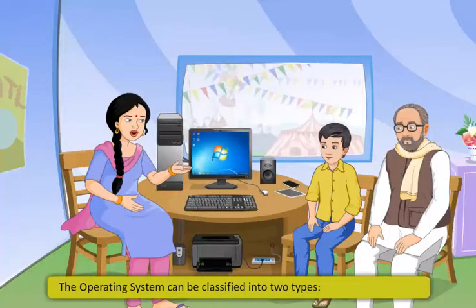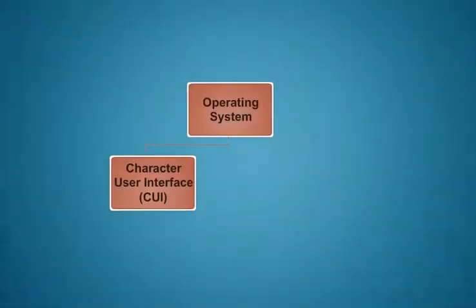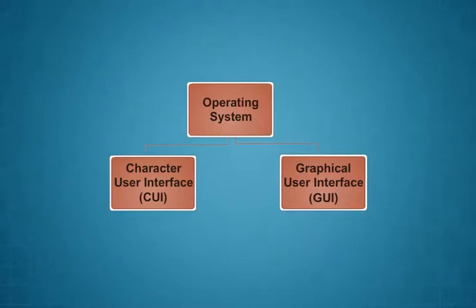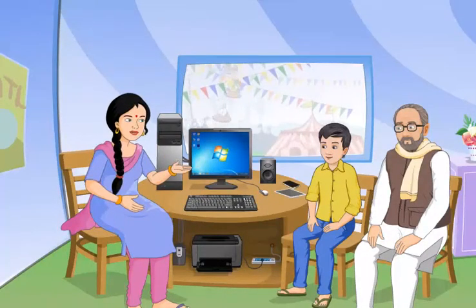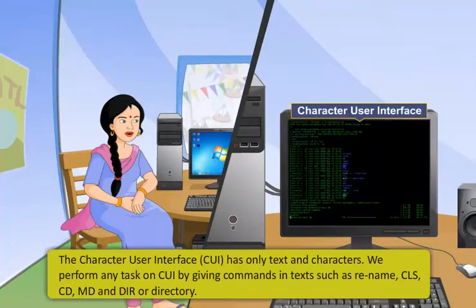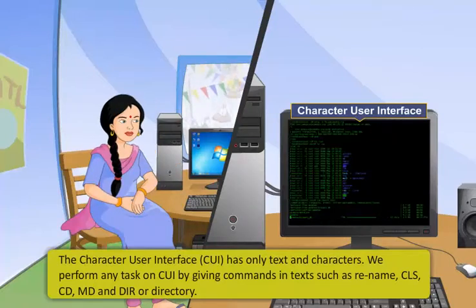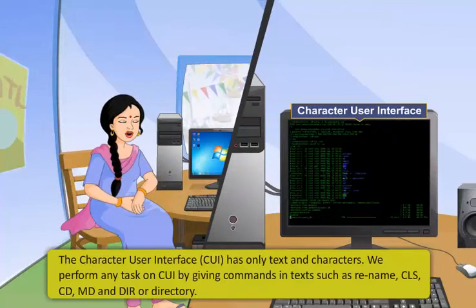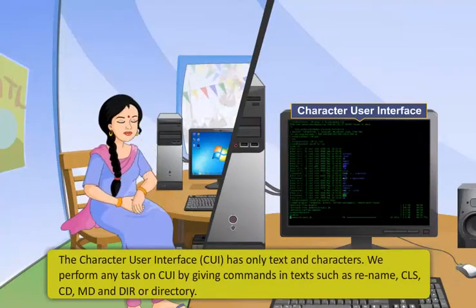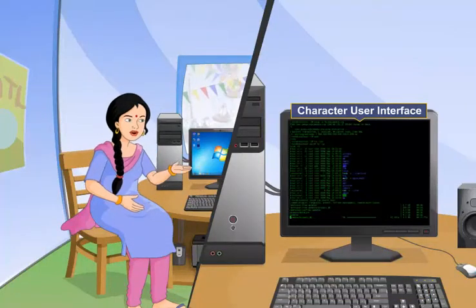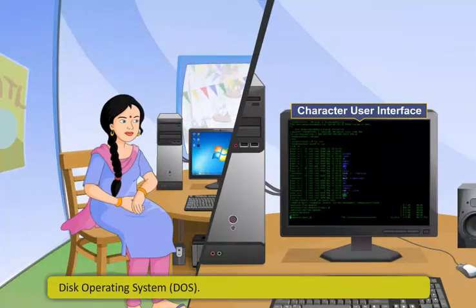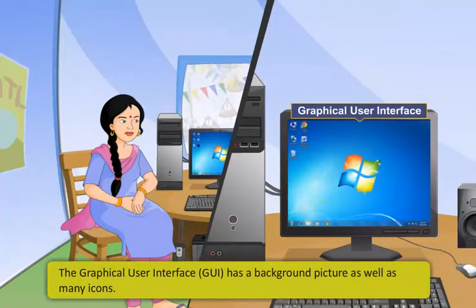The operating system can be classified into two types: Character User Interface and Graphical User Interface. Character User Interface does not have any icons or images — it works using only text and characters. We can perform tasks on CUI by giving commands in text such as rename, CLS, CD, MD, and DIR or directory. An example of CUI is the Disk Operating System.